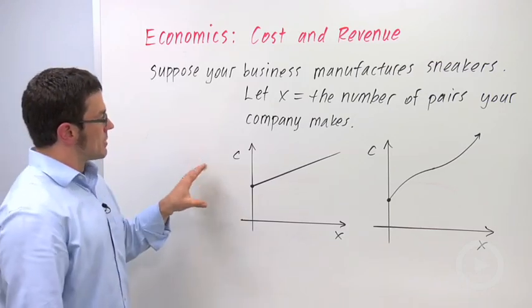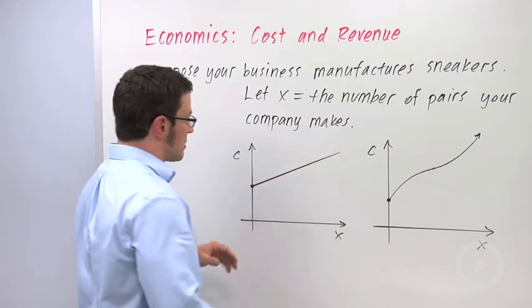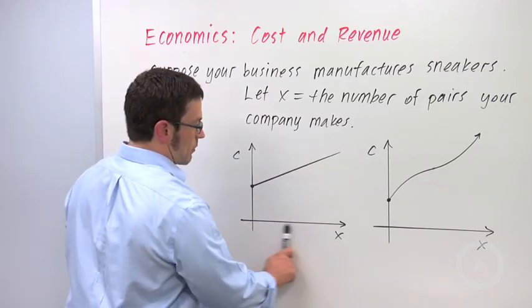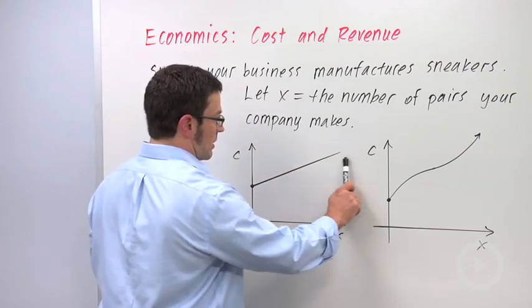A cost function tells you how much it costs to produce X pairs of sneakers. So here's the X axis, the number of pairs of sneakers, and here's the cost axis. And your function might look something like this.